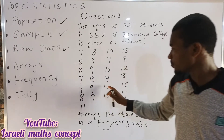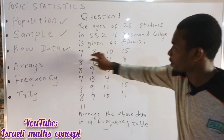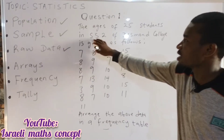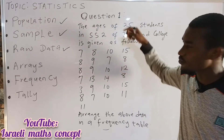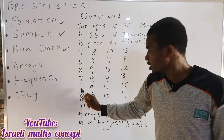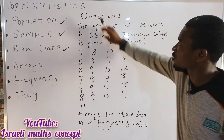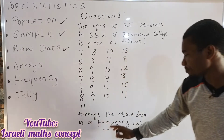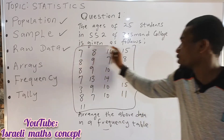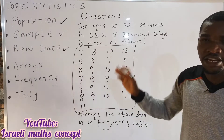...8, 9, 10, 15, 8, 7, 10, 11, and 11. If we count all these ages, they should be up to 25 students in SS2 of Desmond College — and indeed they count up to 25. We are asked to arrange this data in a frequency table. This video will help you understand how to arrange a given set of data in a frequency table, because when your data is in a frequency table it becomes convenient to interpret. Looking at these various scattered ages, one cannot easily interpret the data, but a frequency table makes it easy.